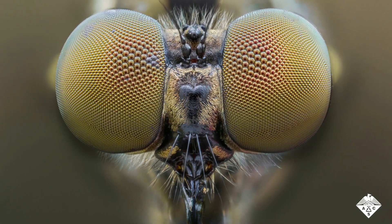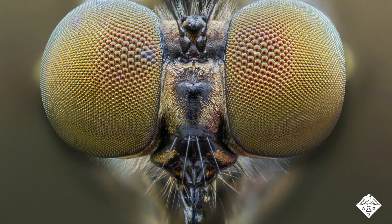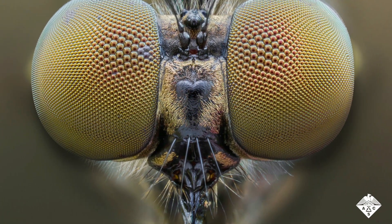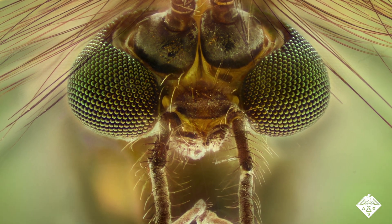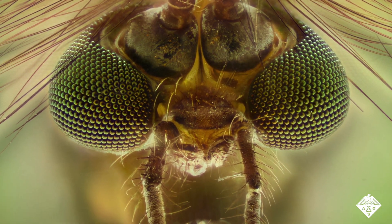Most insects have compound eyes, which are curved arrays of microscopic lenses. Each tiny lens captures an individual image, and the mosquito's brain puts all of the images together to achieve peripheral vision, without the insect having to move its eyes or head.